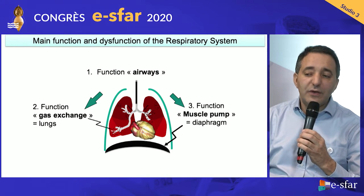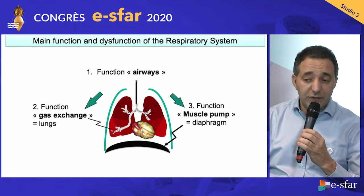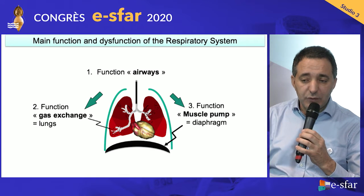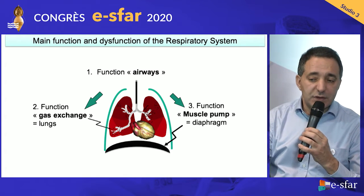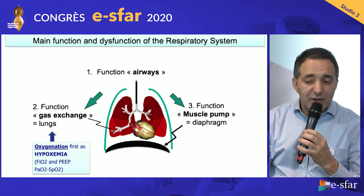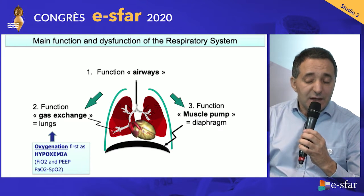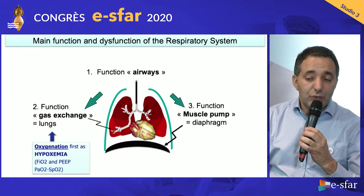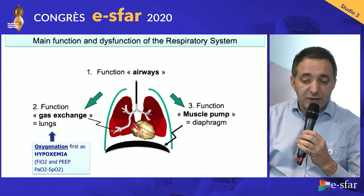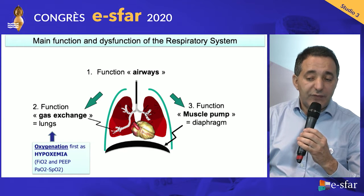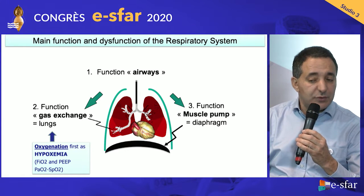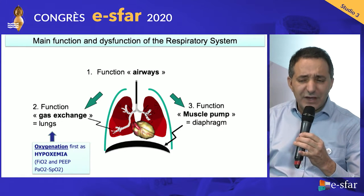However, when you have a dysfunction of one of the three main functions — mainly due, for example, to a surgical procedure — you can have a dysfunction of gas exchange, and the surrogate of gas exchange dysfunction is mainly hypoxemia. The first strategy is to provide oxygenation, which is related to FiO2 and PEEP. You should monitor it by PO2 and pulse oxygen saturation. This is a major issue.